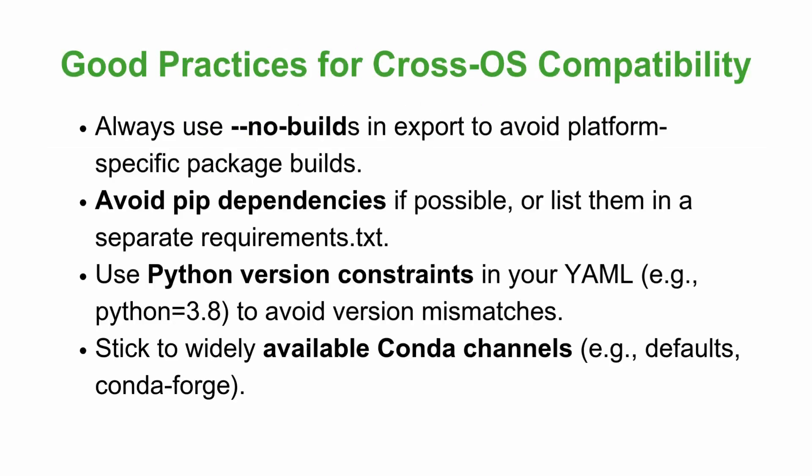Some good practices you should follow for cross-OS compatibility: always use --no-builds in export to avoid platform-specific package builds. Avoid pip dependencies if possible, or list them in a separate requirements.txt file. You can also use Python version constraints in your YAML — for example, specifying 'python==3.8' to avoid version mismatches.